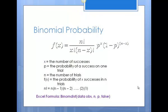Here is the binomial formula. X is the number of successes, P is the probability of success in one individual trial, N is the number of trials, and f(x) is the probability of x successes in N trials. In Excel, use BINOM.DIST(x, n, p, false). The last argument is always false. You will be solving these both by hand and in Excel.